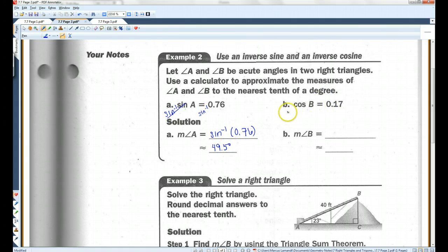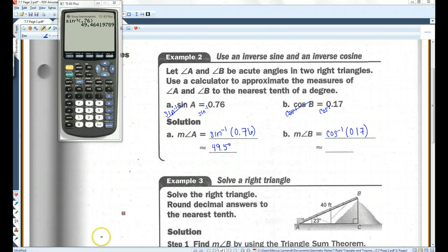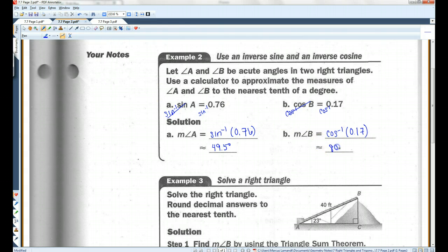We're going to do the same thing here. Inverse cosine, inverse cosine. That cancels out, so the measure of angle B is inverse cosine of 0.17. Second cosine, should get inverse cosine, .17. 80.2 degrees.